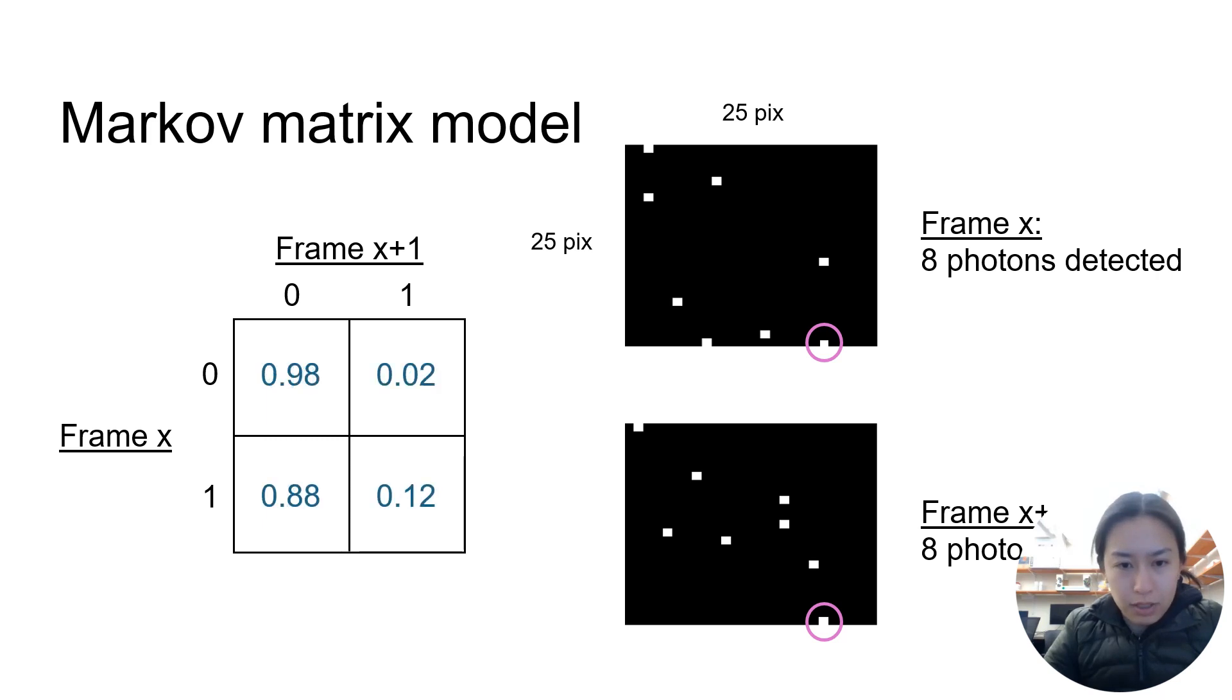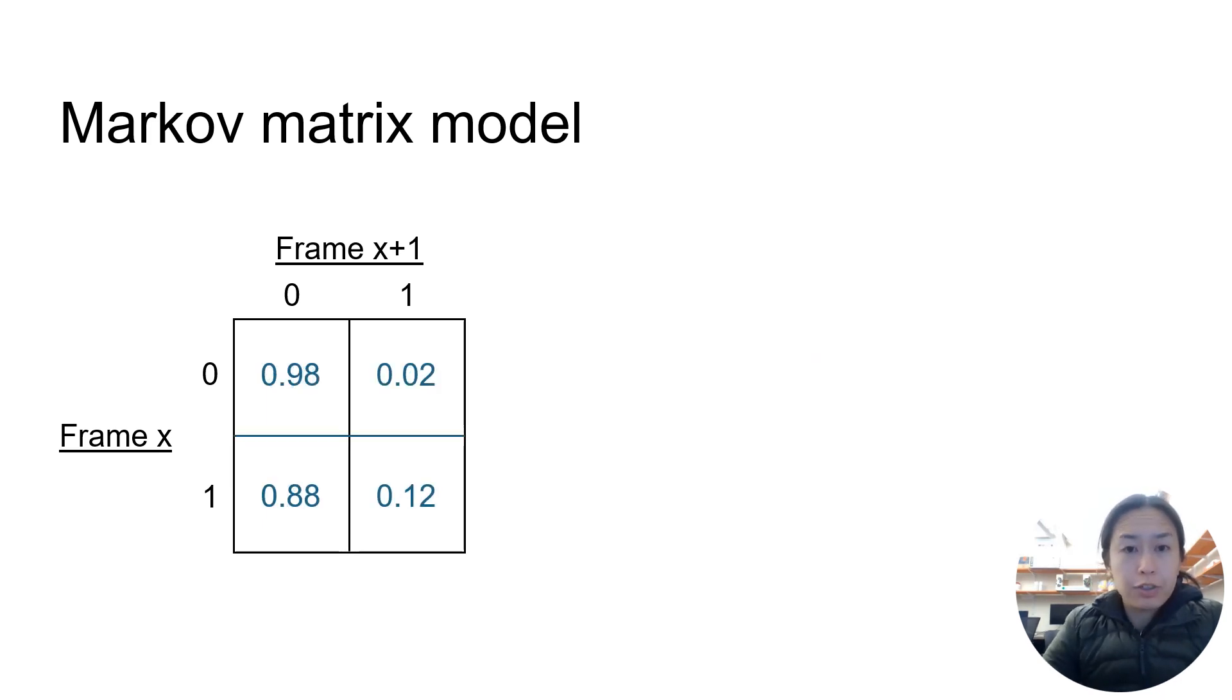After this, we normalize the matrix such that each row sums to one. We call this matrix T. Here, we take the eigenvalues of T, which is the scalar value λ which satisfies this equation with the eigenvector u.